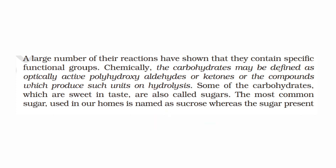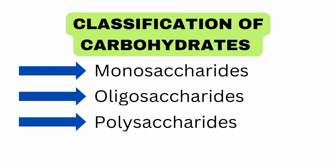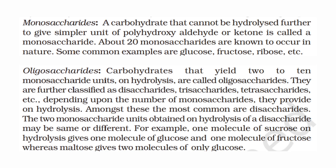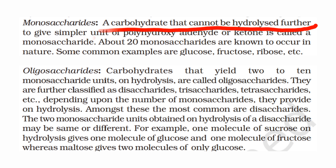The classification of carbohydrates has mainly three types: monosaccharides, oligosaccharides, and polysaccharides. Monosaccharides include sugar molecules like glucose, fructose, and ribose. These cannot be hydrolyzed further to give simpler units of polyhydroxy aldehyde or ketone.